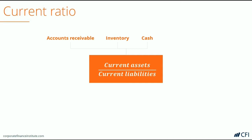Another account commonly included in current assets is prepaid expenses. An example could include an insurance policy or any expense on the income statement that is paid in advance of when the work is actually being completed. As you can see, many of these current assets in the numerator may actually need to be discounted, or would actually produce less cash than we are led to believe.